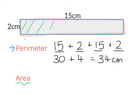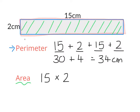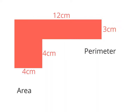Now for the area. The area is the space inside of the shape and it is found by multiplying the length by the breadth — one side measurement by the other. So it's 15, the length of the shape, by the breadth which is 2. 15 times 2 is 30, and it's in centimeters squared.